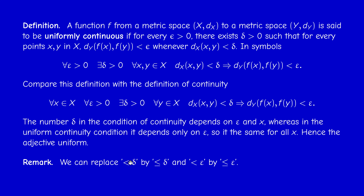Of course, instead of strictly less than delta, we can write less than or equal to delta, and instead of less than epsilon, we can write less than or equal to epsilon. Because if it's less than or equal to epsilon, it's strictly less than 2 epsilon. So if you prove this for 2 epsilon or 100 epsilon, it's the same thing, because epsilon was arbitrary.